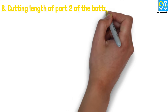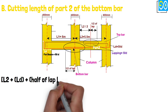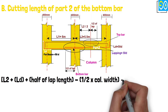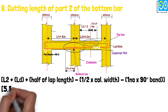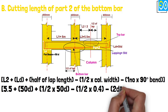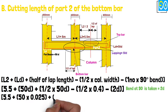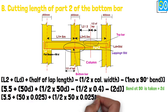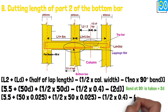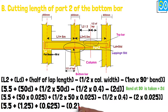Cutting length of Part 2 of the bottom bar equals L2 plus Ld plus half of lap length minus half times column width minus 1 number times 90-degree bend. Equals 5.5 plus 50D plus half times 50D minus half times 0.4 minus 2D. Equals 5.5 plus 1.25 plus 0.625 minus 0.2 minus 0.05, equals 7.125 meters.